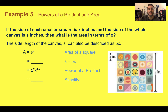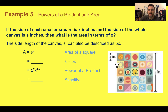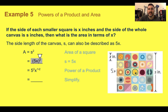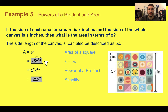Example five: powers of a product and area. If each side of the smaller square is x inches and the side of the whole canvas is S inches, what is the area in terms of x? The length of the canvas S can also be described as 5x — if this side is x, then we count 1x, 2x, 3x, 4x, 5x. So we plug in 5x for S, giving us (5x) to the second power. Distributing that 2: 5 to the second power and x to the one times two. Simplifying, 25 times x to the second. So the area of this canvas is 25x squared in terms of the side of a small square.